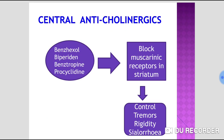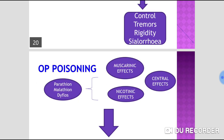Central anticholinergic drugs used as drug of choice in drug-induced Parkinsonism include benzhexol, biperiden, benztropine, and procyclidine. They block muscarinic receptors in the striatum or basal ganglia, controlling tremors, rigidity, and sialorrhea by reducing cholinergic overactivity in the basal ganglia.